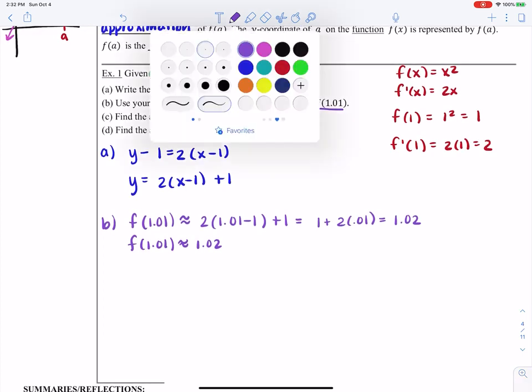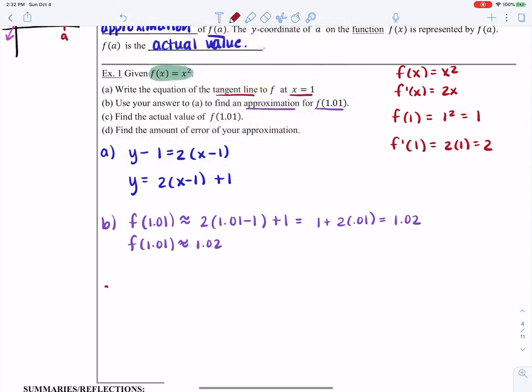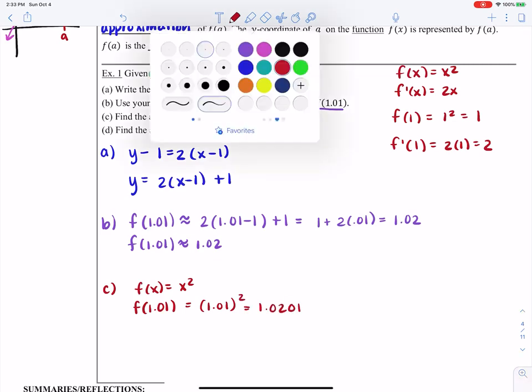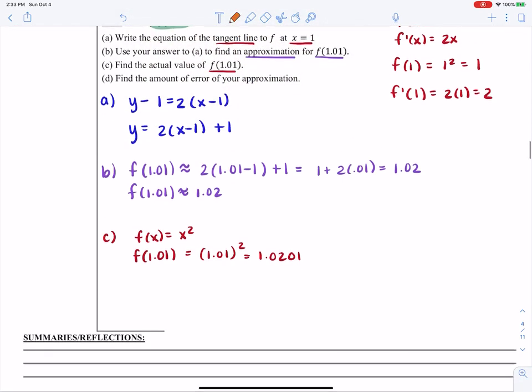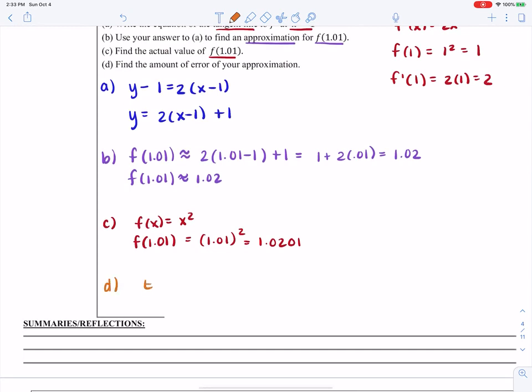Now that doesn't mean that f of 1.01 is 1.02. It means that on the tangent line, 1.02 is the value on the tangent line at the x value of 1.01. And because this is a relatively simple function in part c, I could actually find the actual value of f of 1.01.